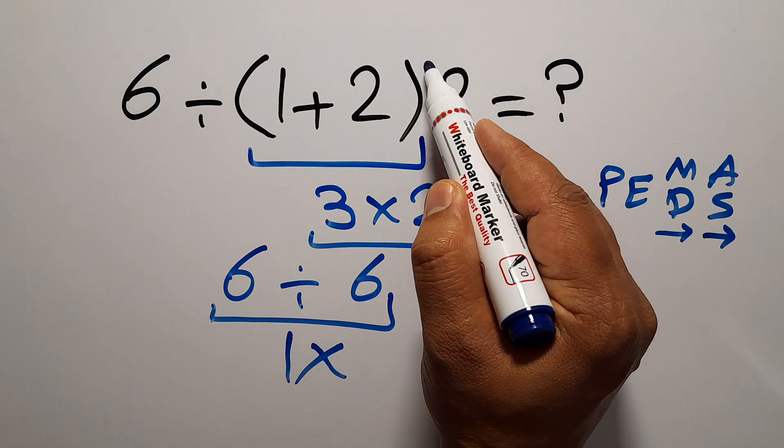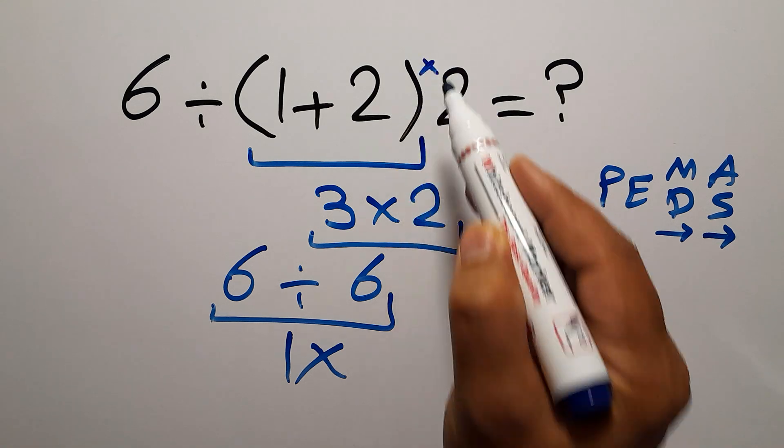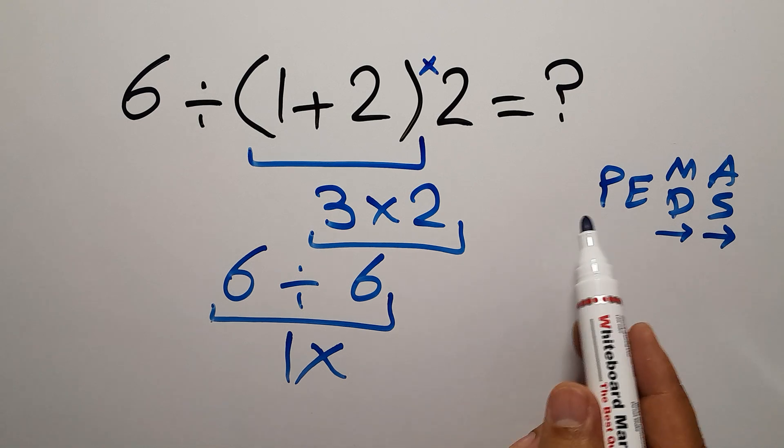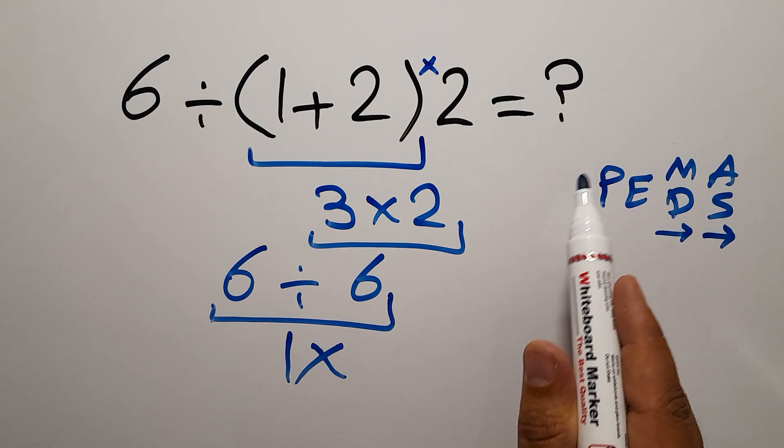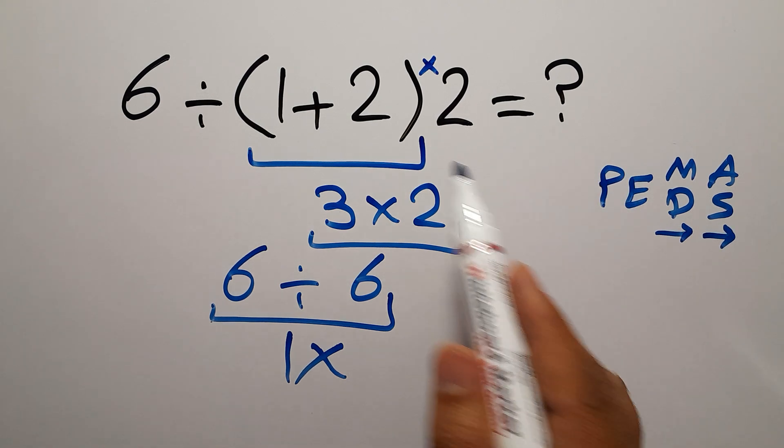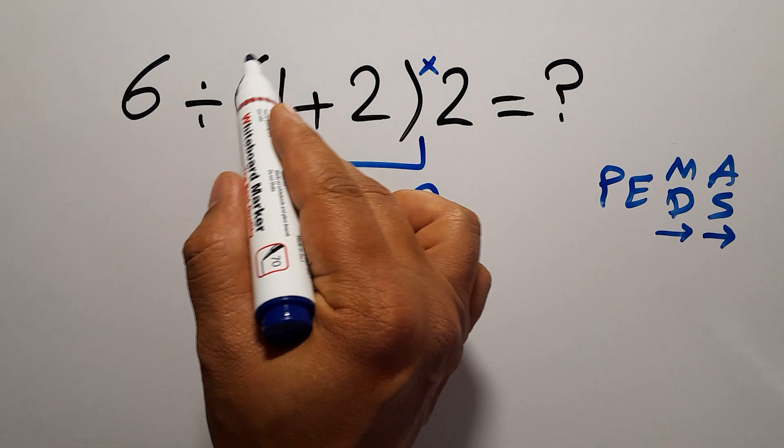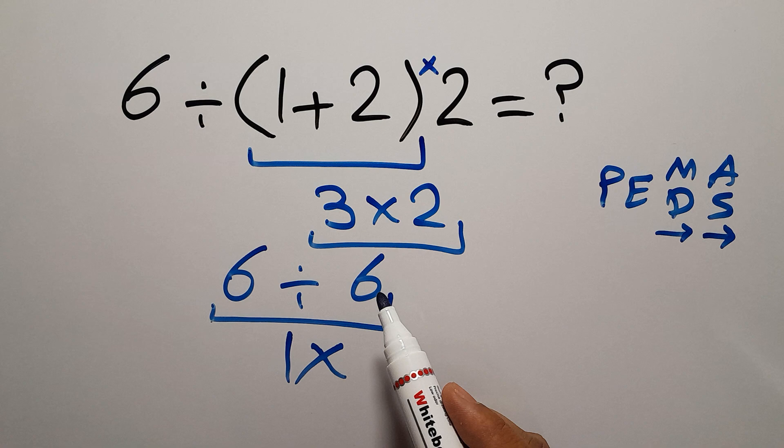We have here a multiplication. In PEMDAS, parentheses comes before multiplication and division, so first we have to do this parentheses.